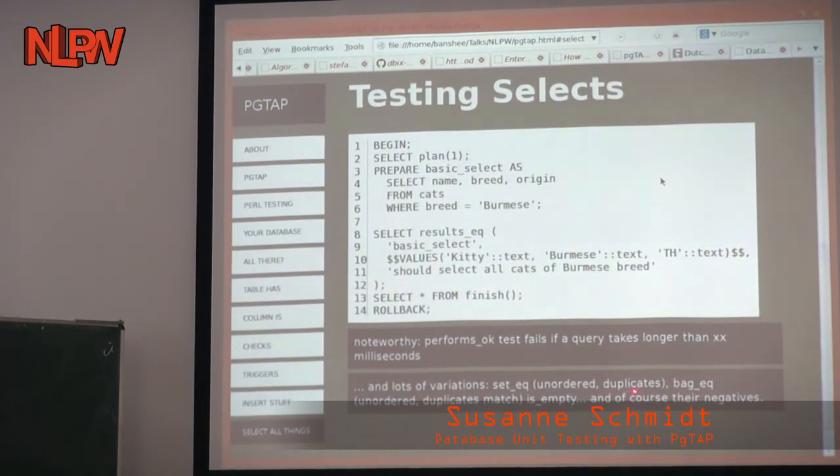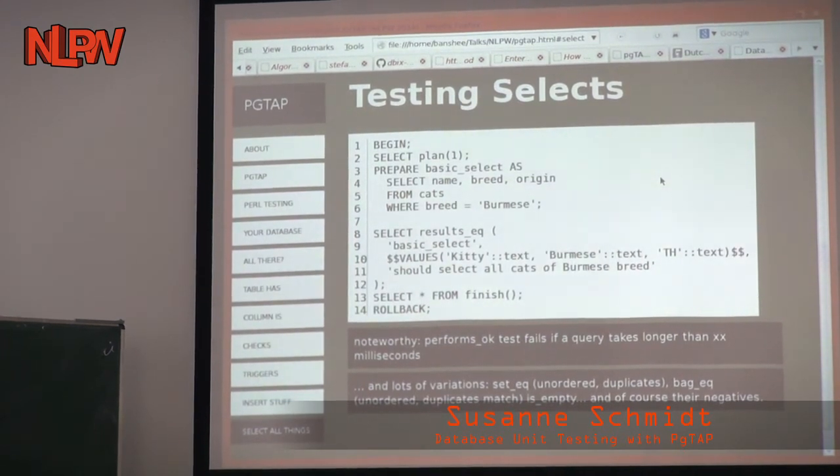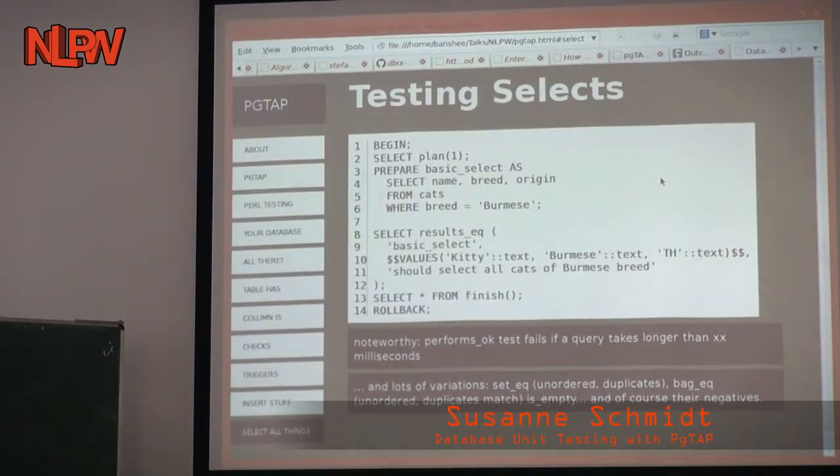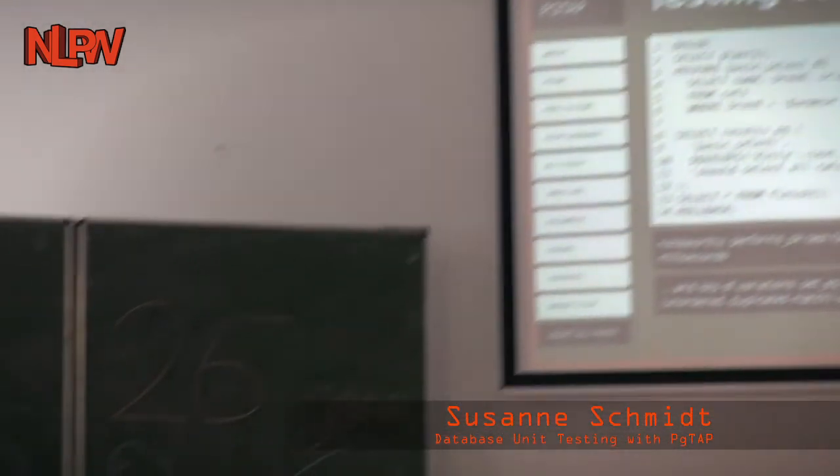And a very nice goodie, which is, of course, database relevant, is performs_ok. You write a test where you say, you expect that this query doesn't take longer than six milliseconds, and run the test on it. Which is, of course, a very nice thing for a database to do. So, this is a variety of testing stuff you get, all with a simple create extension pgTAP on the Postgres database. Which you simply get by installing the code from Postgres has a very tiny, cute little C-pound thingy, where you can download extensions.